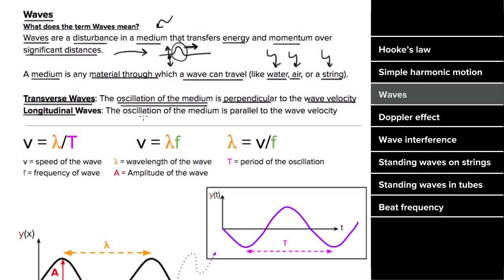For longitudinal waves, the oscillation of the medium is parallel to the wave velocity. The classic longitudinal wave is sound. If a sound wave were traveling rightward through the air, it would look like a compressed region, and the air itself would move back and forth right and left — parallel to the direction the disturbance is traveling — which makes sound waves longitudinal.